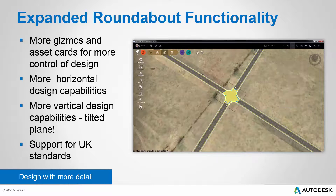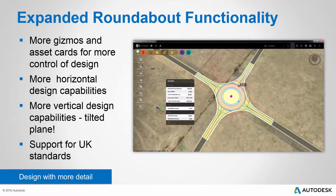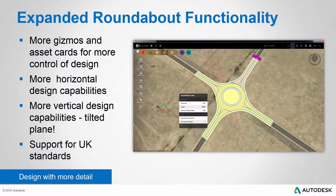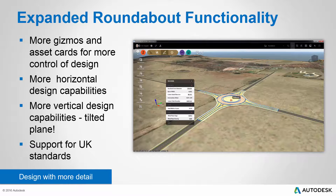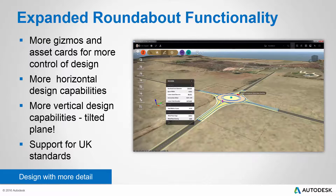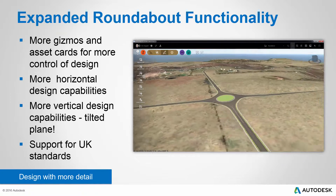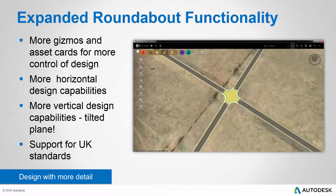In this latest update you'll see some exciting changes to the roundabout functionality. There are now more gizmos and asset cards for more control of the design — a roundel asset card with associated gizmos, and also special gizmos for the arms of the roundabout, giving you more horizontal design capabilities than ever before. There are also more vertical design capabilities: as you flip the view into 3D, you can easily control the elevation of the roundabout and also control the tilt and its direction. On top of that, we've expanded roundabout capabilities by adding support for UK standards.